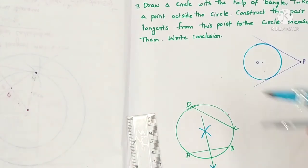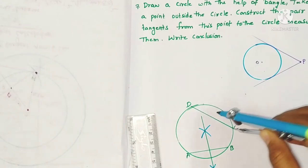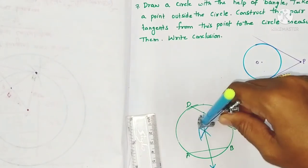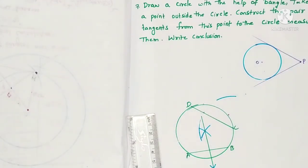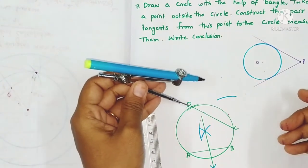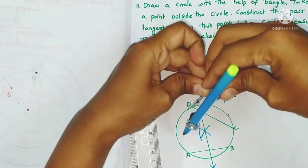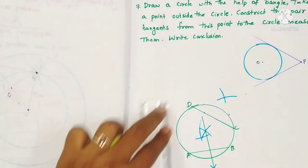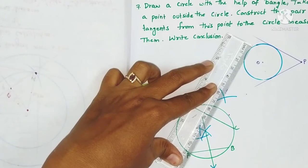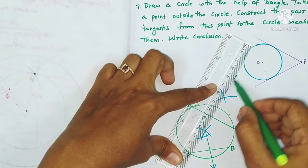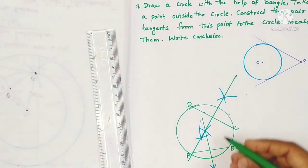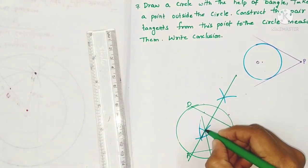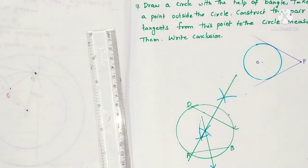Similarly, draw the perpendicular bisector of chord CD. Take more than half the length, draw arcs from C on both sides of CD, and similarly from D draw two arcs. Now join them with the scale. This is the perpendicular bisector of CD.